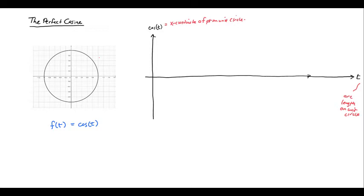So let's just think for a little bit about what some of the key values for this function are going to be. First of all what happens when t is 0? When t is 0 we start right here and we don't go anywhere. That's the point 1, 0. So the x-coordinate when t is 0 is going to be 1.